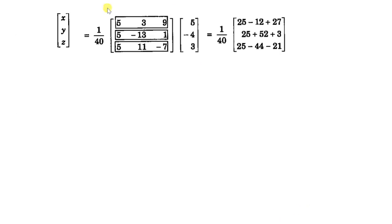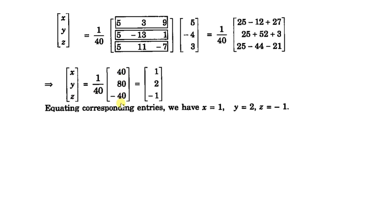Then x equals 1 divided by the determinant A which is 40, multiplied by adjoint A times matrix B. We get 1/40 of 40, 80, and minus 40. Dividing each term by 40, and comparing the two matrices, we get x equal to 1, y equal to 2, z equal to minus 1. That is all for today. Thank you.